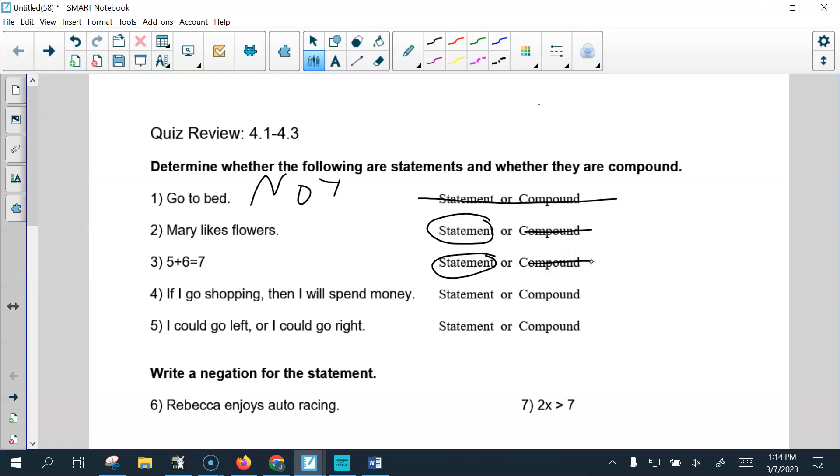If I go shopping, then I will spend money. That is a statement, and it is compound. I could go left. I could go right. That is a statement, and it is compound.